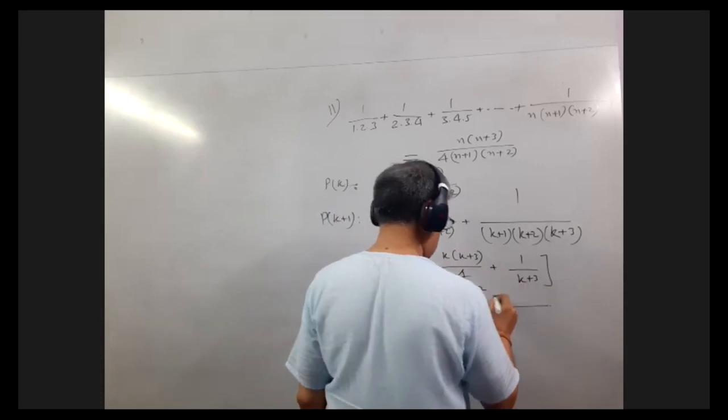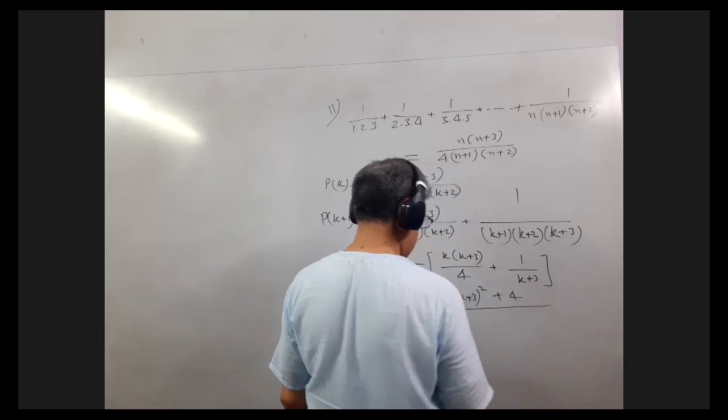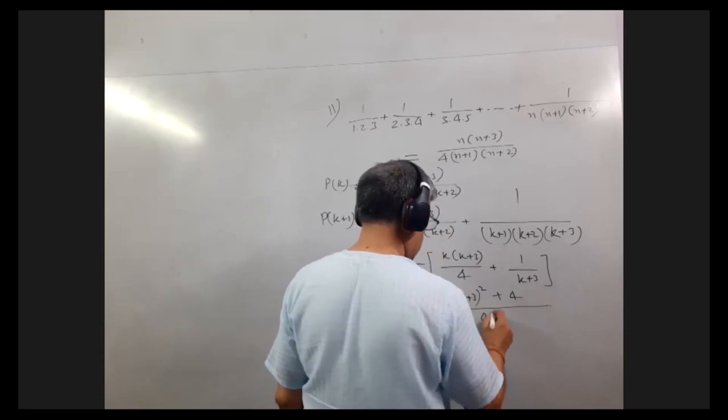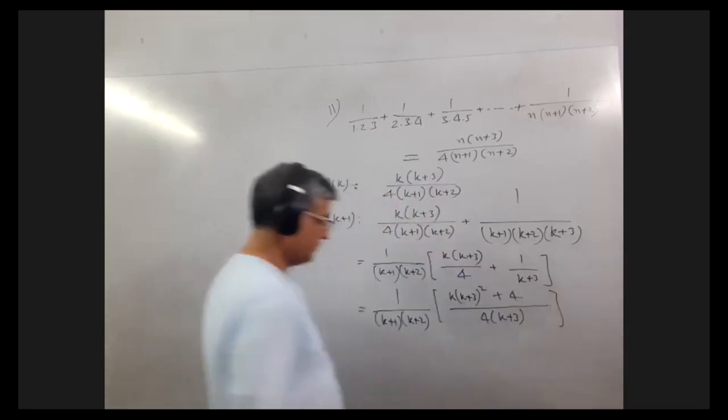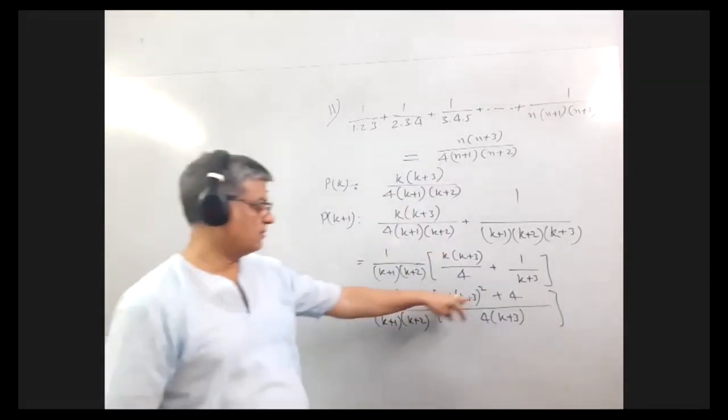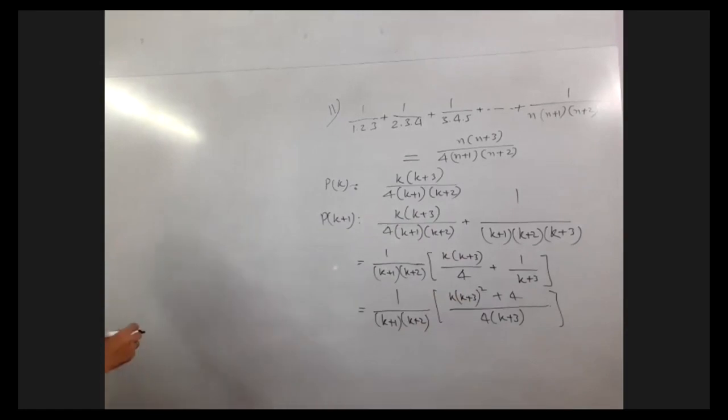Plus 4 upon 4 into k plus 3. What will we get? 1 upon k plus 1 times k plus 2.